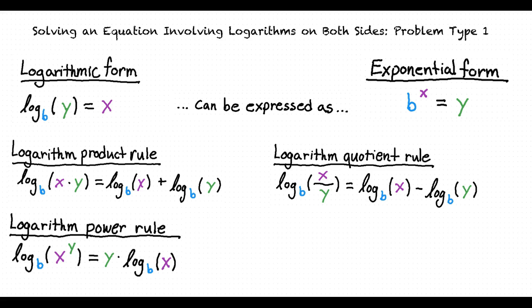When solving an equation involving logarithms on both sides, we want to use the properties of logarithms to rewrite the two logarithms as one. Once there is only one logarithm in the problem, we can rewrite our logarithmic equation in exponential form, allowing us to solve for unknown variables.